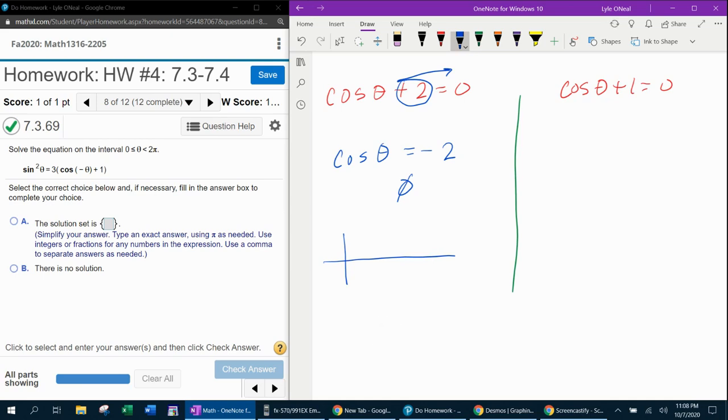Remember back when we graphed cosine theta, just the regular trig function, cosine theta starts at one, and by the time you get to two pi, it's back up to one. So the cosine graph, just cosine of theta, looks like this.